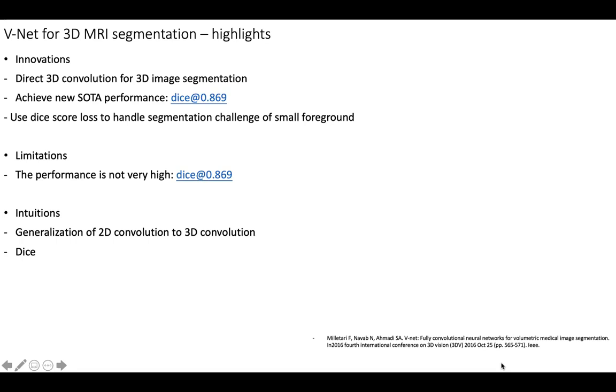Another innovation is it uses a dice score loss to handle the segmentation challenge of a really small foreground. The limitation of this paper is that its performance is not really high. As we just mentioned, it's just 0.869.